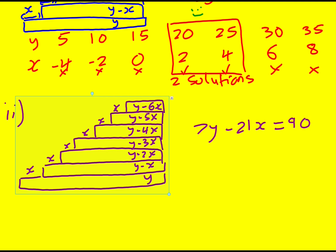And what I can see is that the left-hand side now is divisible by 7, but the right-hand side is not. So I would get y minus 3x equals 90 over 7, which is 7s into 90 go 1, 2, remainder 6. So I'm going to get 12 and 6 over 7.